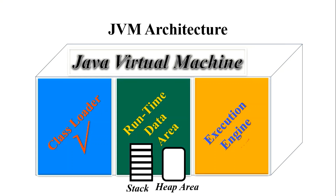Now we will talk about the runtime data area, which is the second main component of JVM. Just like a car that needs a road or a train that needs a track to run, the JVM needs a memory area to store class files. This runtime memory area is comprised of many types of memory: method area, heap memory area, stack memory area, program counter register, and native methods.